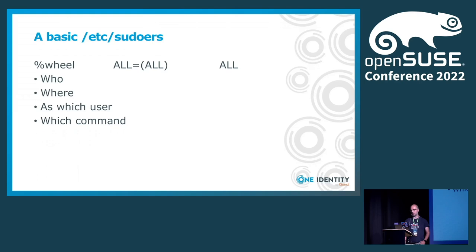Let's go back to basics a bit. This is the configuration which arrives on most sudo installations. It's a very simple rule: members of the wheel group can do practically anything on a system. The various columns mean who, on which system, as which user, and which commands are allowed — and we can see that practically everything is permitted. But even this really simple rule is useful as you can see in your logs who executed what commands on your system.